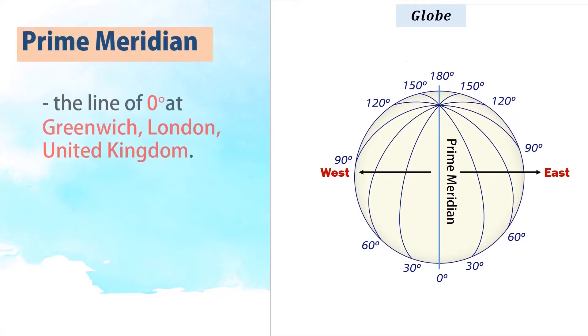The prime meridian is at longitude 0 degrees at Greenwich, London, United Kingdom.